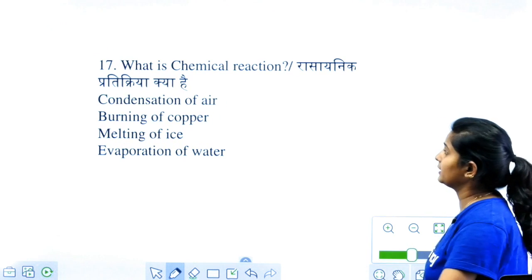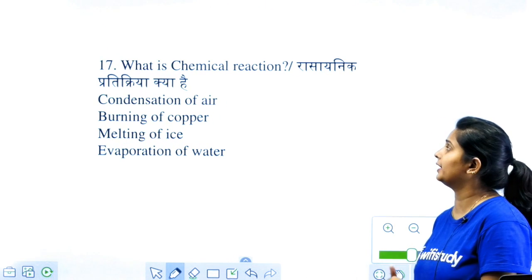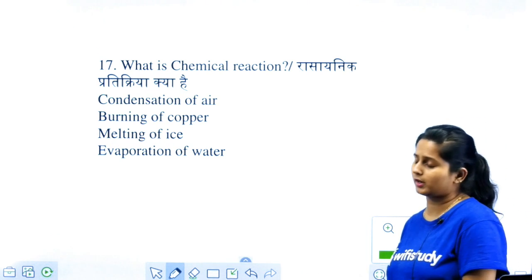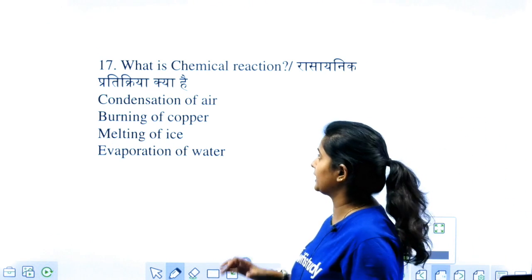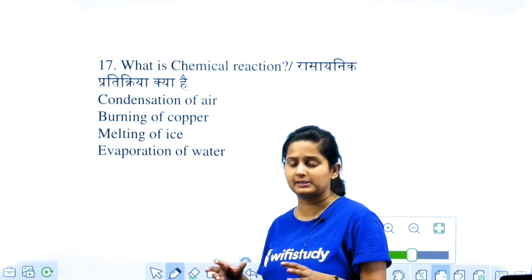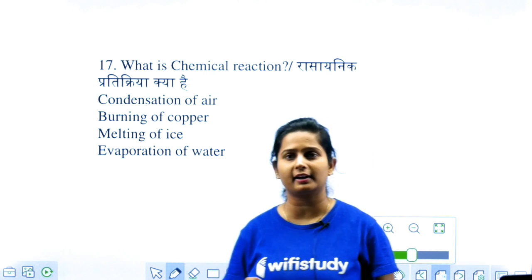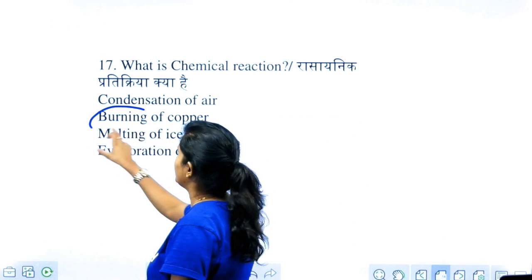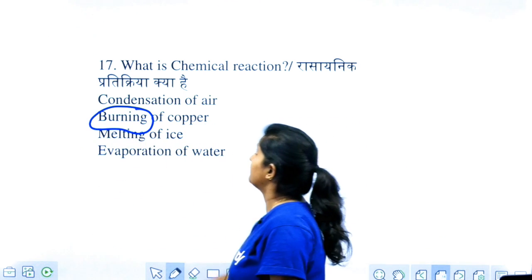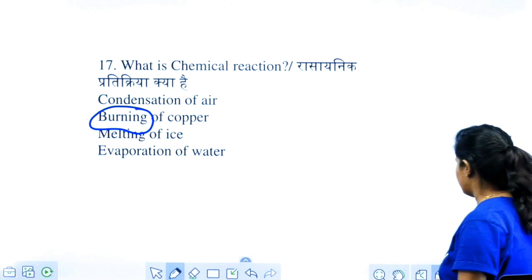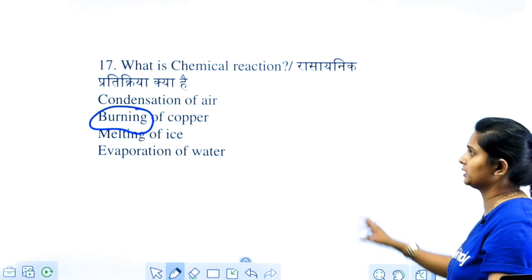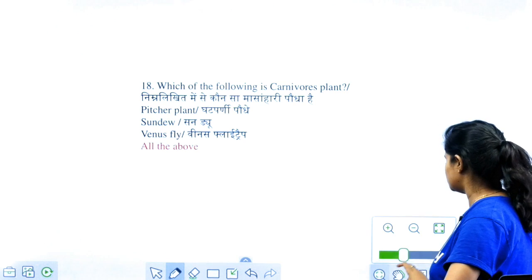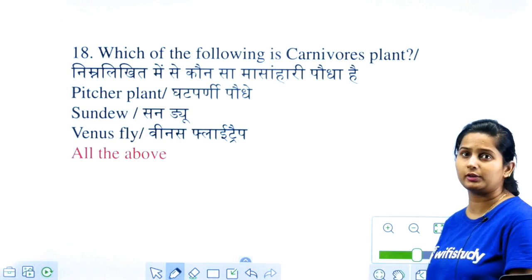What is a chemical reaction? Options: condensation of air, burning of copper, melting of ice, evaporation of water. As I told you before, the best way to identify chemical vs. physical reactions: if burning is written, it will always be a chemical reaction. The other three things — condensation, melting, evaporation — can be reversed and obtained again.